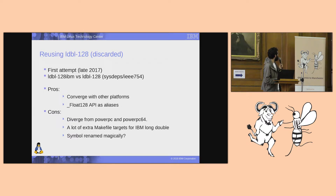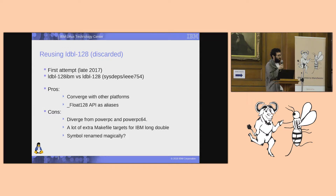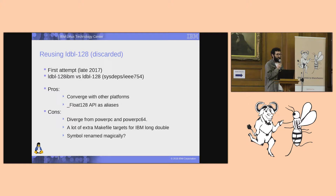So I mentioned I would talk about something I tried but didn't work well. The first attempt was late last year. I proposed some patches, and Joseph asked me what I was trying to do. I explained I was trying to make PowerPC 64-bit little-endian stop using the LDBL-128-IBM directory — which contains the code for the double-double format — and start implying LDBL-128 by default. For those not familiar, architectures use an implies file mechanism to specify which directories to use.